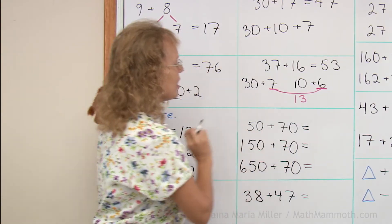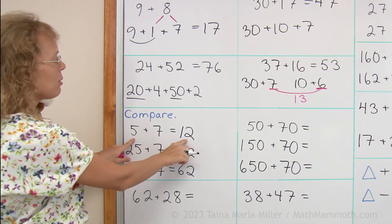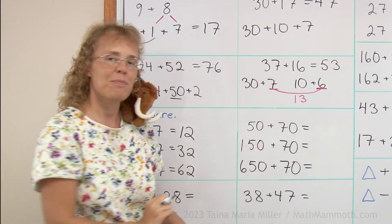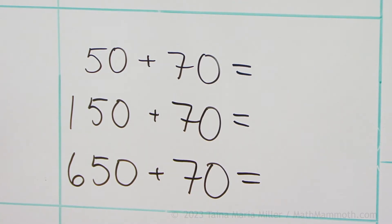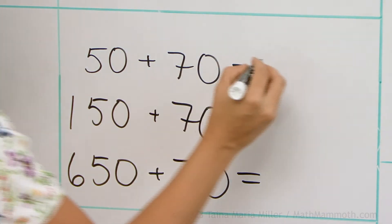50 plus 70. 5 and 7 makes 12, so how about 50 and 70? It's 5 tens and 7 tens. So we get 12 tens, which is 120.